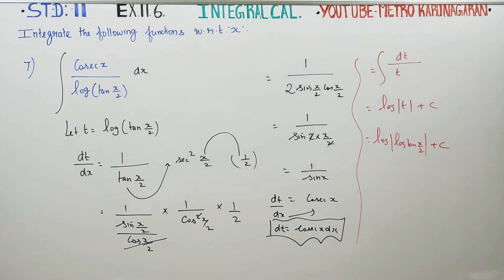Instead of t, you have to substitute the original, that is log tan x by 2, and you have to conclude the sum. Thank you.